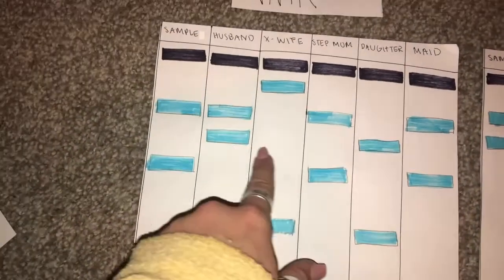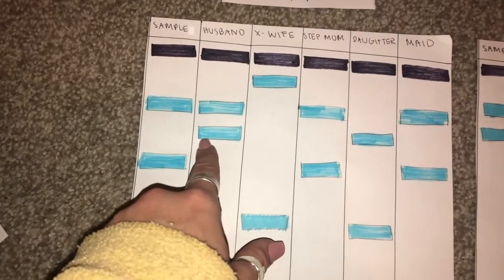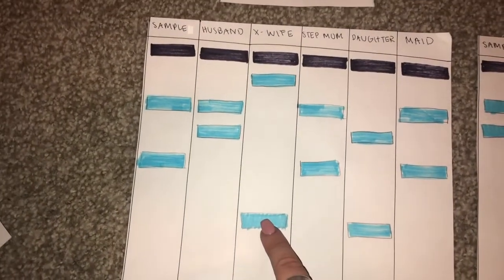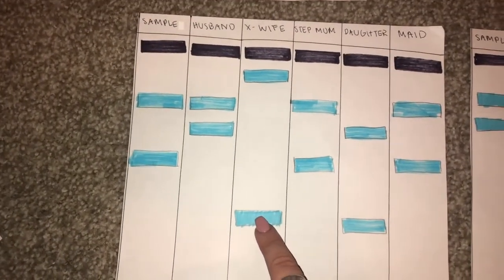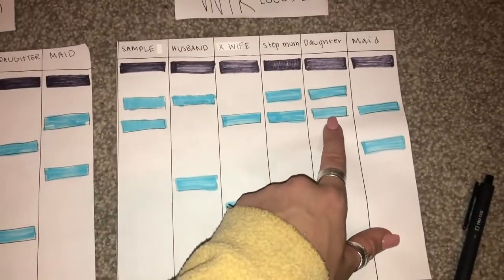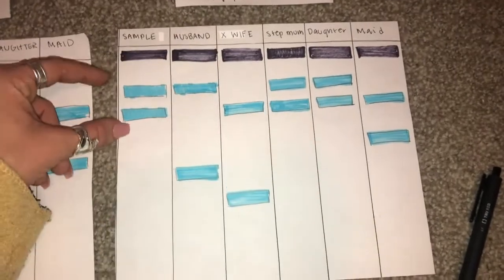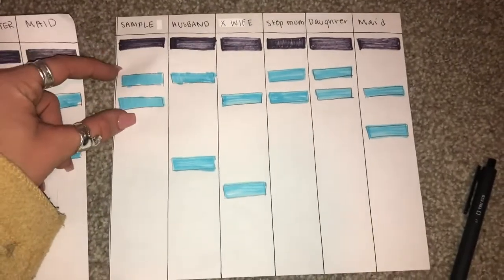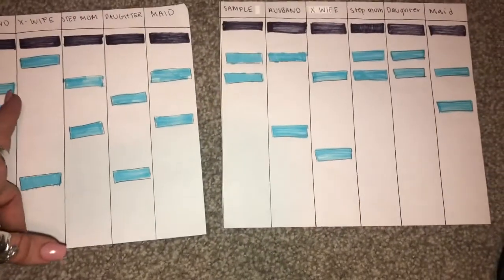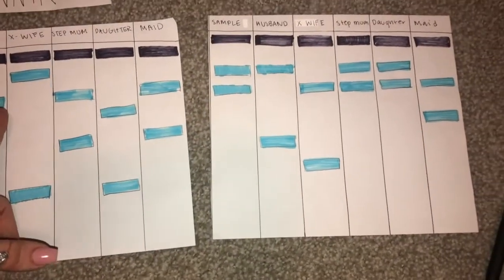Next we're looking at the daughter. She has 50% of the husband's DNA and the other 50% from the ex-wife. But she doesn't share any sample at VNTR 1; however she does match fully at VNTR 2. Because she doesn't match fully at VNTR 1 we can exclude her, as she would need to match fully at both loci.